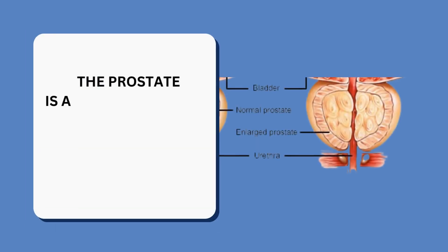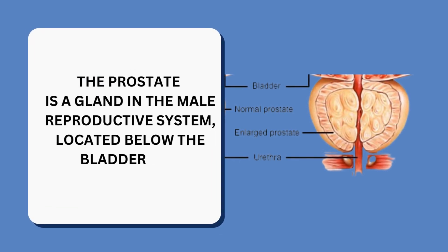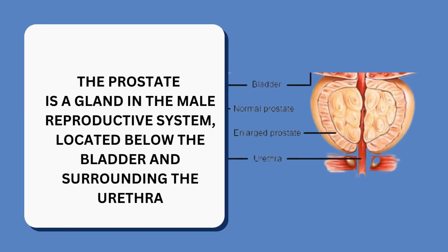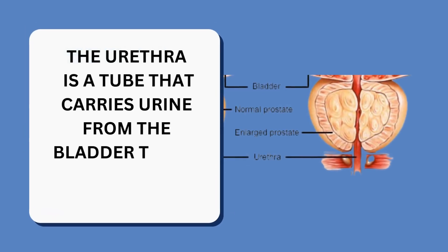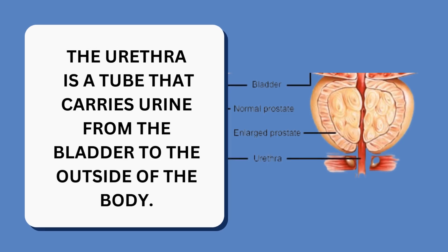The prostate is a gland in the male reproductive system located below the bladder and surrounding the urethra. The urethra is a tube that carries urine from the bladder to the outside of the body.